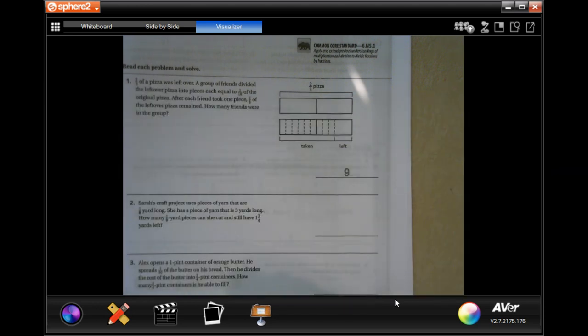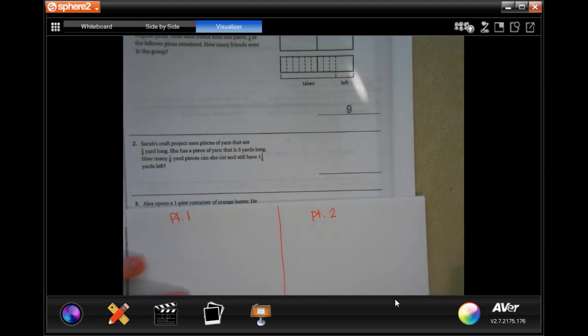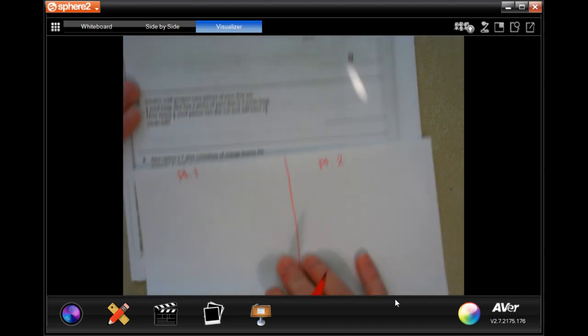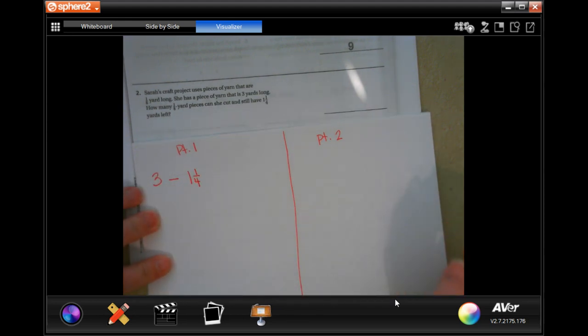Sarah's Craft Project uses pieces of yarn that are 1⅛ yards long. She has a piece of yarn that is 3 yards long. How many 1⅛ yard pieces can she cut and still have 1¼ yards left over? We are going to start with 3 yards that she has, and we're going to take away the 1¼ because she wants that leftover no matter what. Then we will divide into 1⅛ pieces.